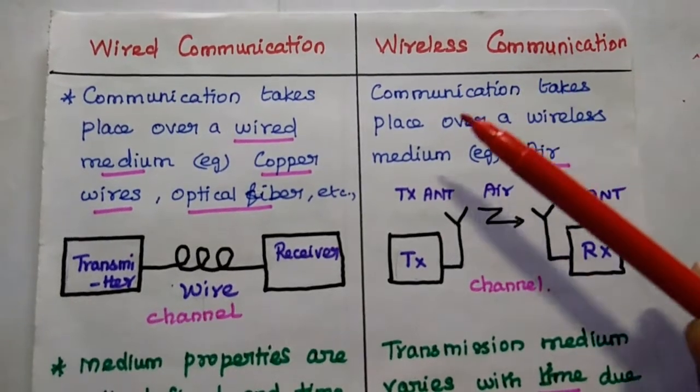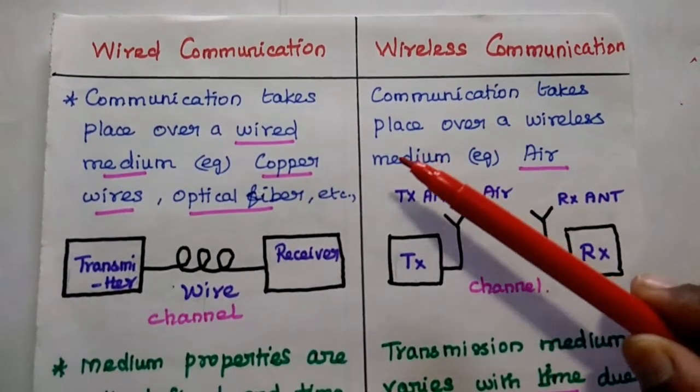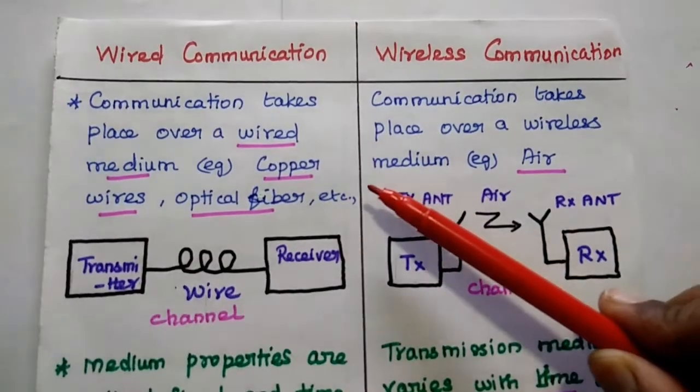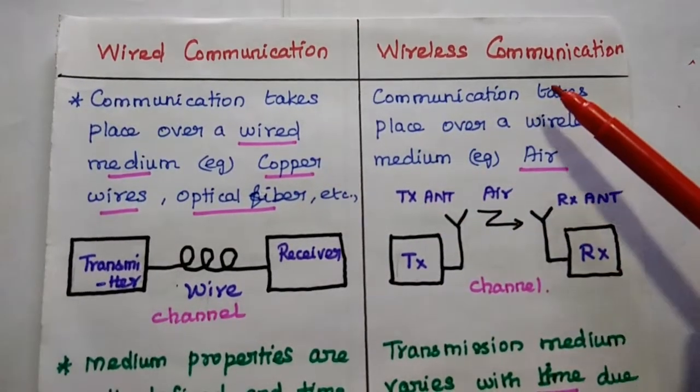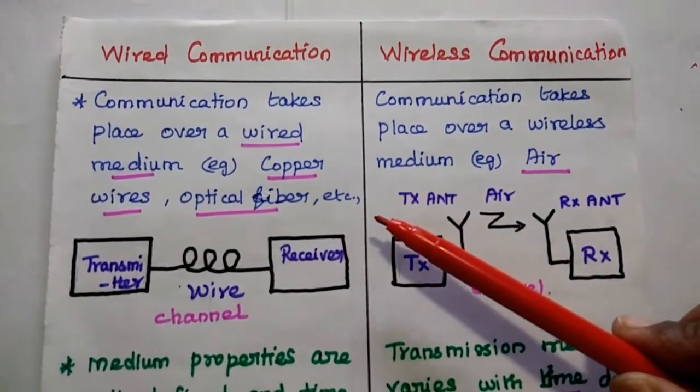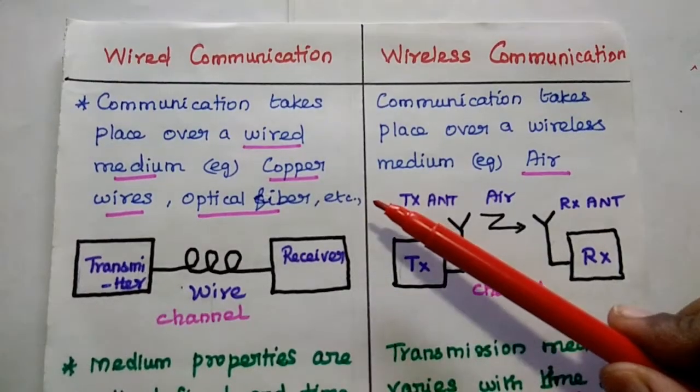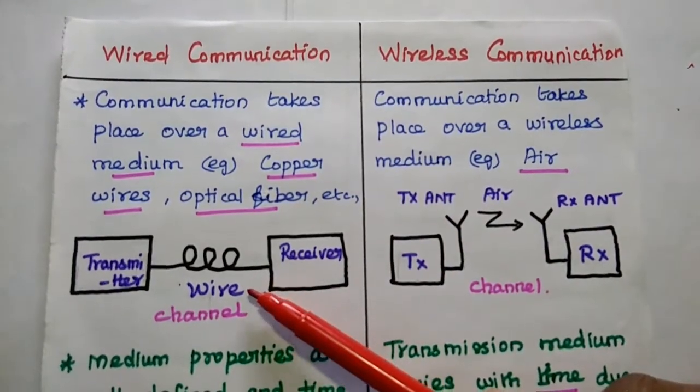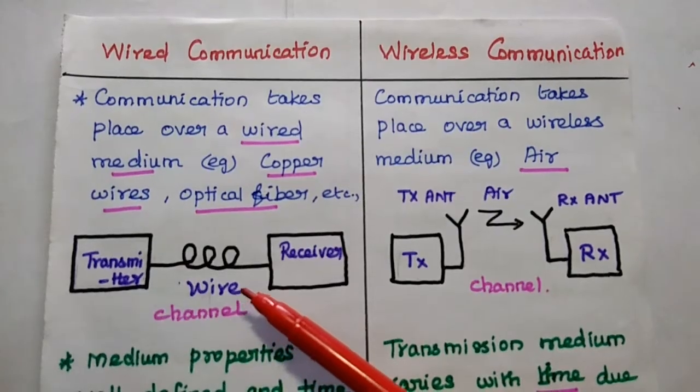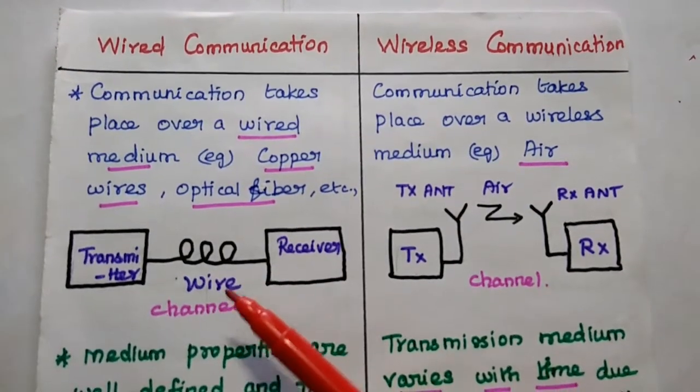Dear students, now we are going to discuss the comparison of wired communication and wireless communication. In wired communication, the communication takes place over a wired medium. For example, copper wires, optical fiber cables can be used as a channel.